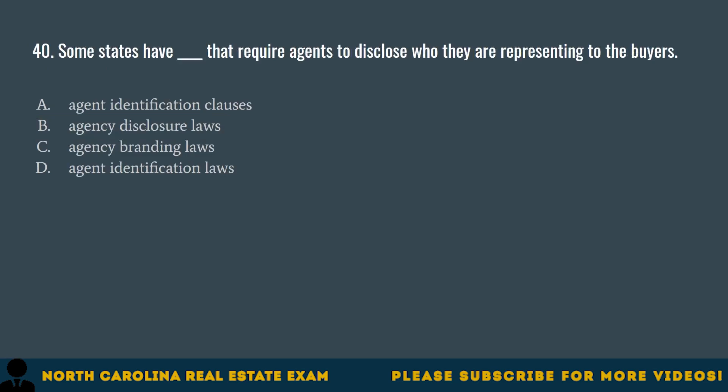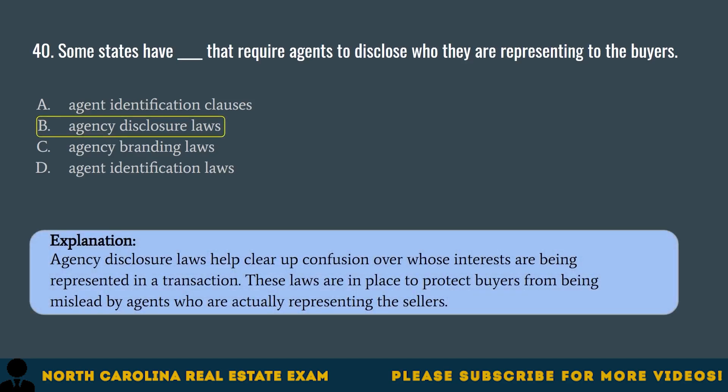Question 40. Some states have blank that require agents to disclose who they are representing to the buyers. A. Agent identification clauses. B. Agency disclosure laws. C. Agency branding laws. D. Agent identification laws. The correct answer is B. Agency disclosure laws. Agency disclosure laws help clear up confusion over whose interests are being represented in a transaction. These laws are in place to protect buyers from being misled by agents who are actually representing the sellers.